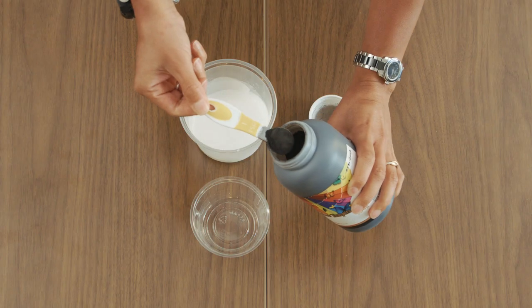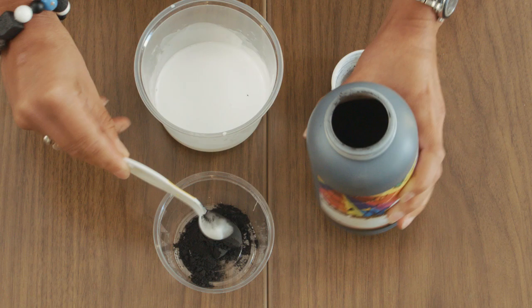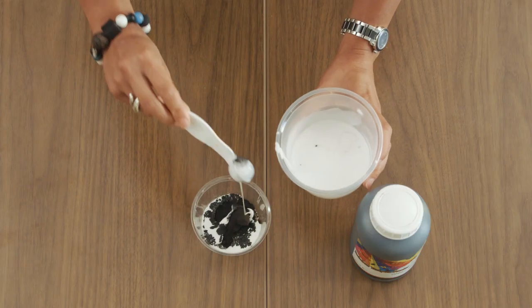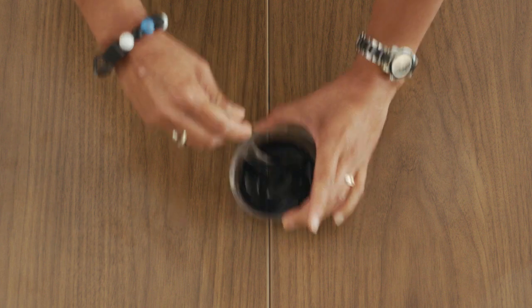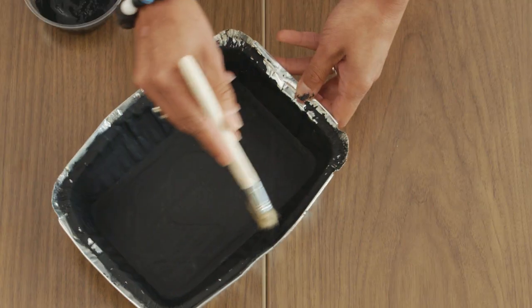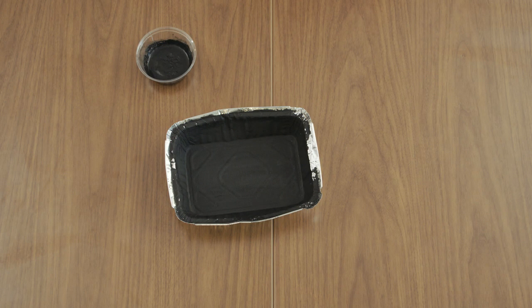In the plastic container, mix two teaspoons of black tempera paint with three teaspoons of the glue mixture. Apply the black paint evenly over the inside of the aluminum foil tin, ensuring full coverage. Set this aside to dry.